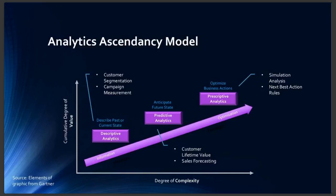In terms of the different types of analytics, I like to use something called the analytics ascendancy model or framework, developed by Gartner Research. It gives us a way to think about classifying all different types of analytics into three primary categories. We have descriptive analytics — think of things such as customer segmentation solutions or post-campaign analysis and measurement. Anything in this bucket is really looking to describe the past or the current state.